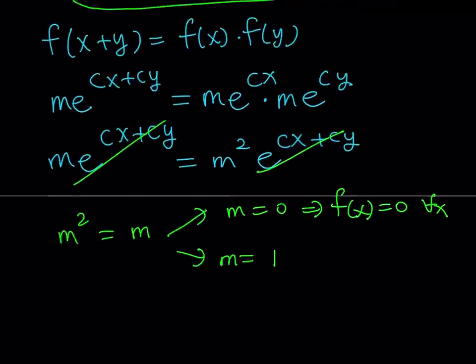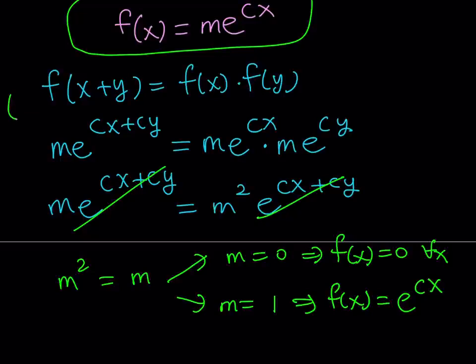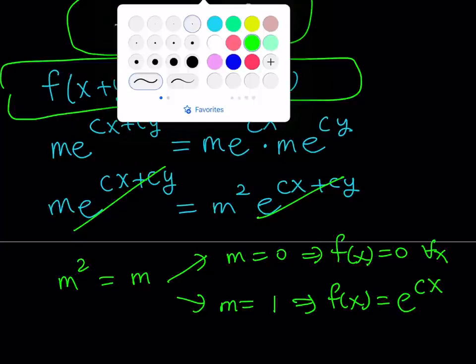If m equals 1, that's the better solution. From here we get f of x equals 1 times e to the power cx, which gives us the more general solution. In other words, if you have a functional equation like this, then the exponential function is going to be a solution, where c is a constant.